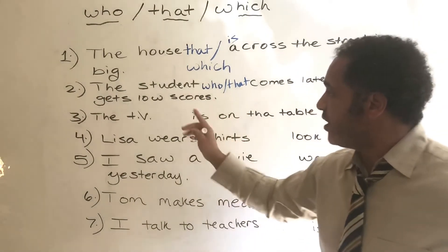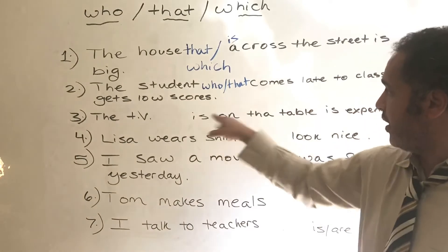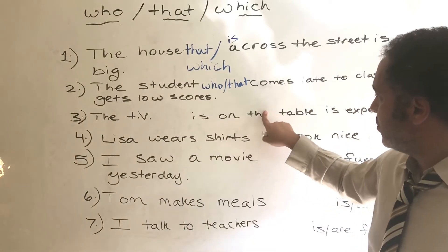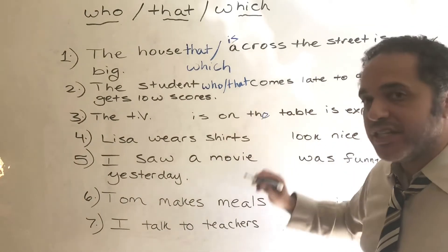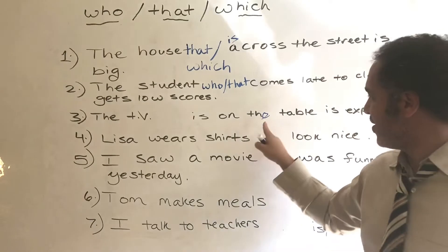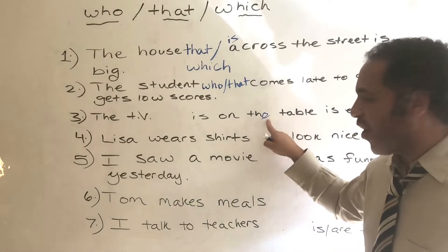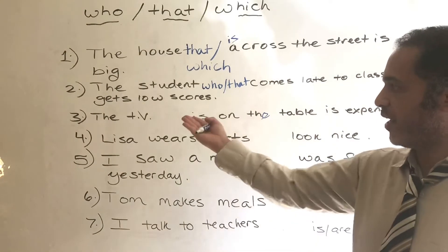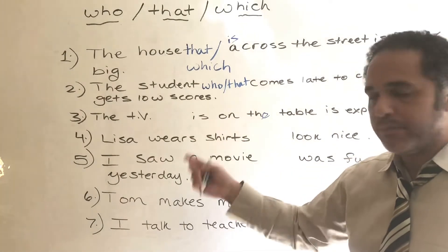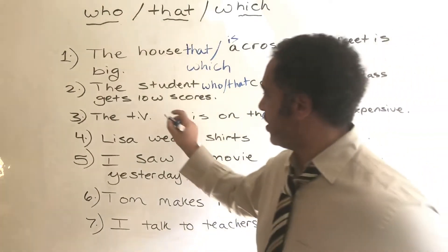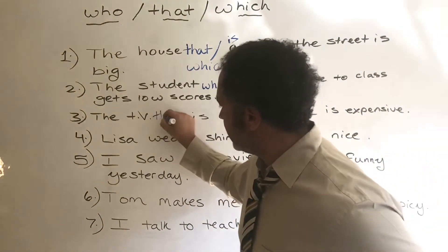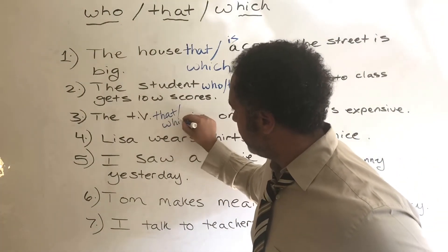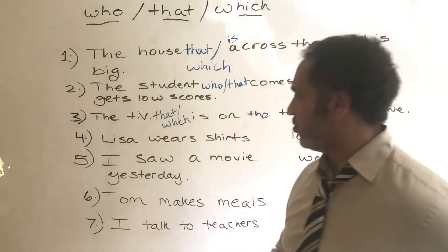Number three: 'The TV blank is on the table is expensive.' So again it is an object, so I can say 'that' or I can say 'which.'